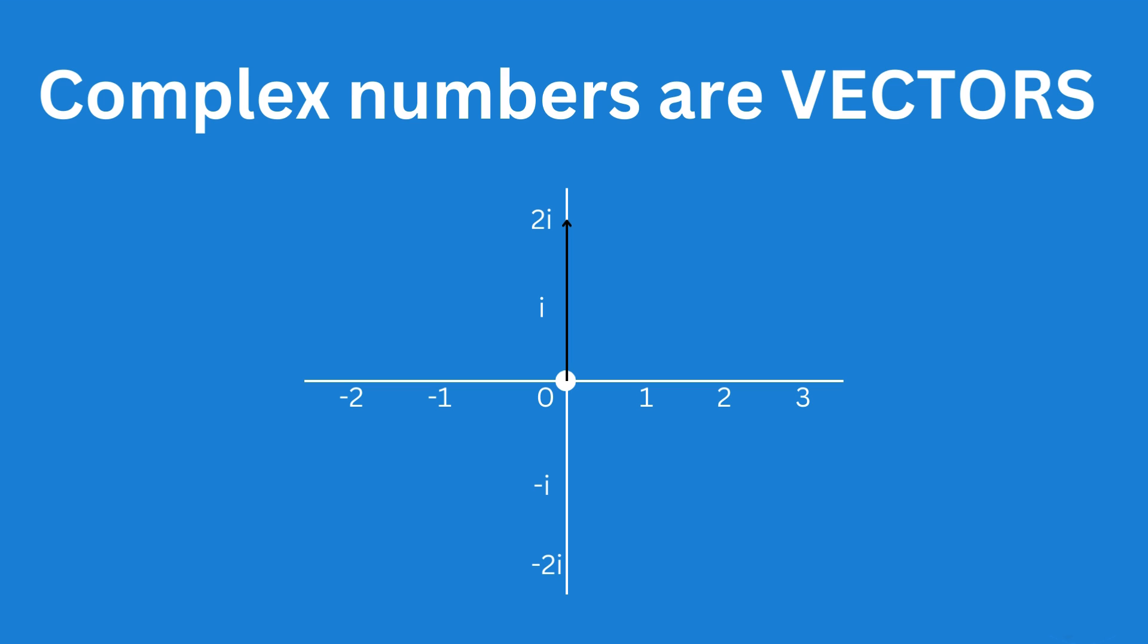You can see here that although 2i is on a different number line, it is at a distance of 2 from the origin. It is just that it is in the positive i direction. That means that 2 and 2i both have the same length of 2.